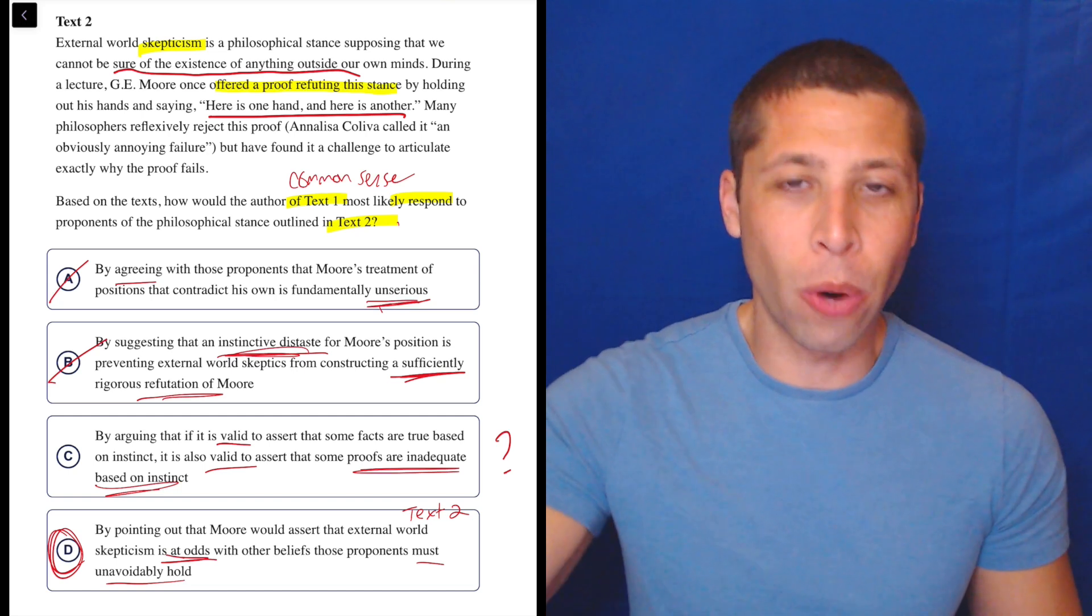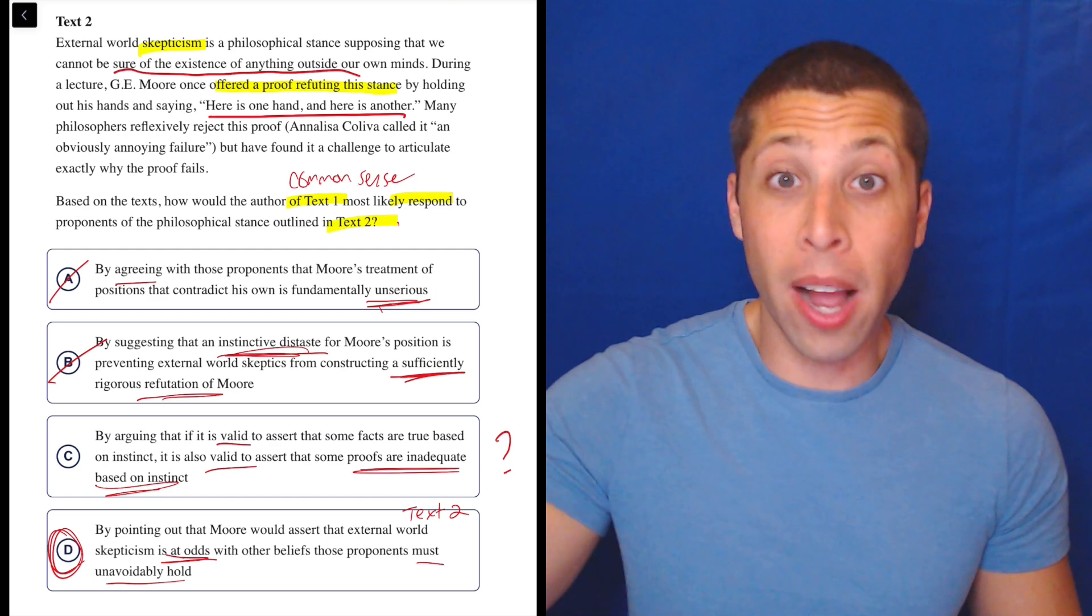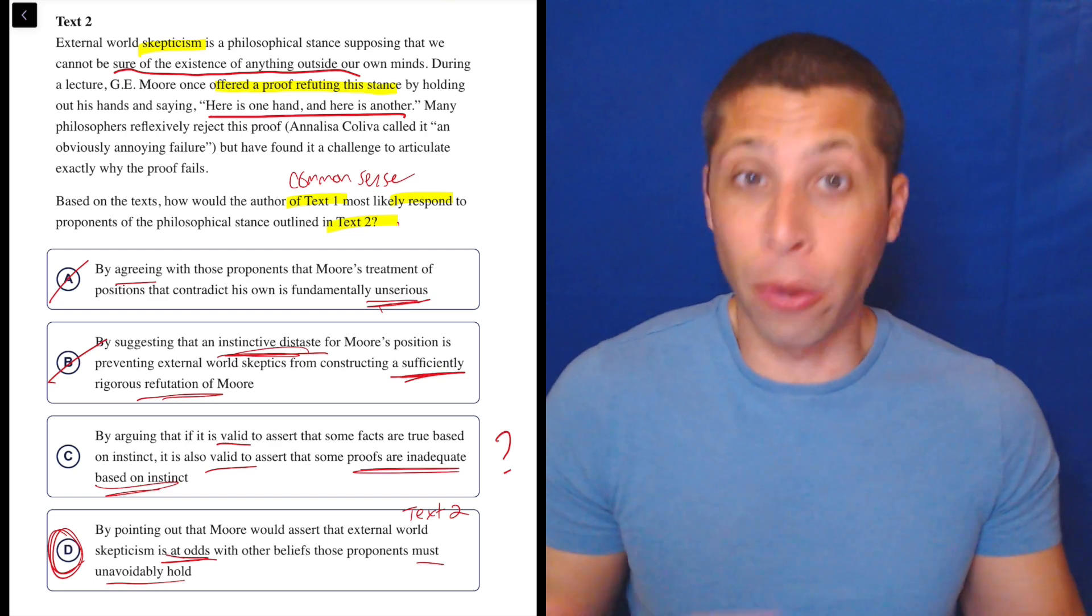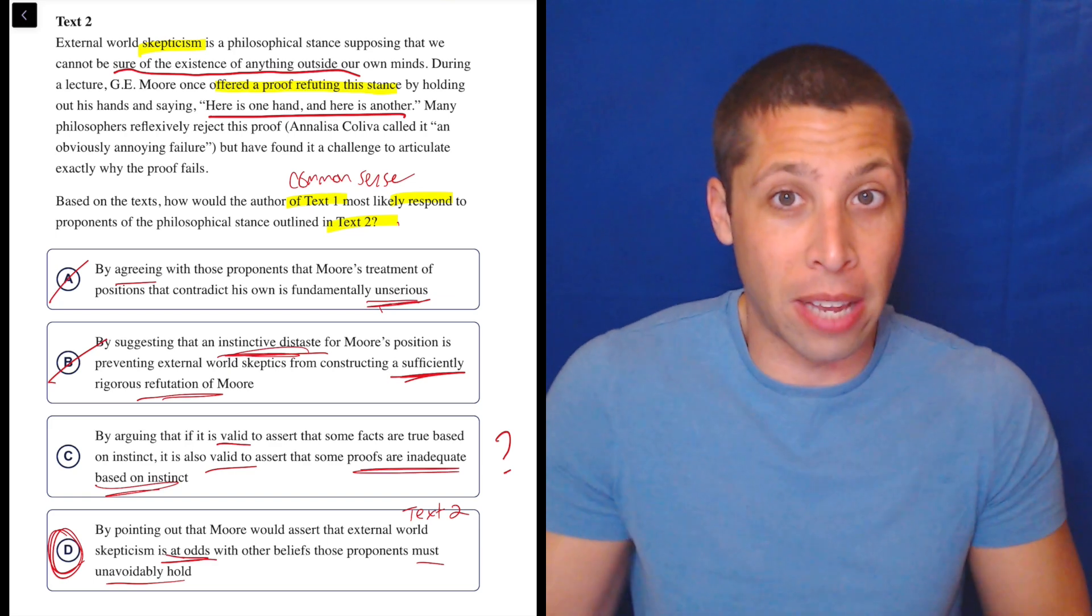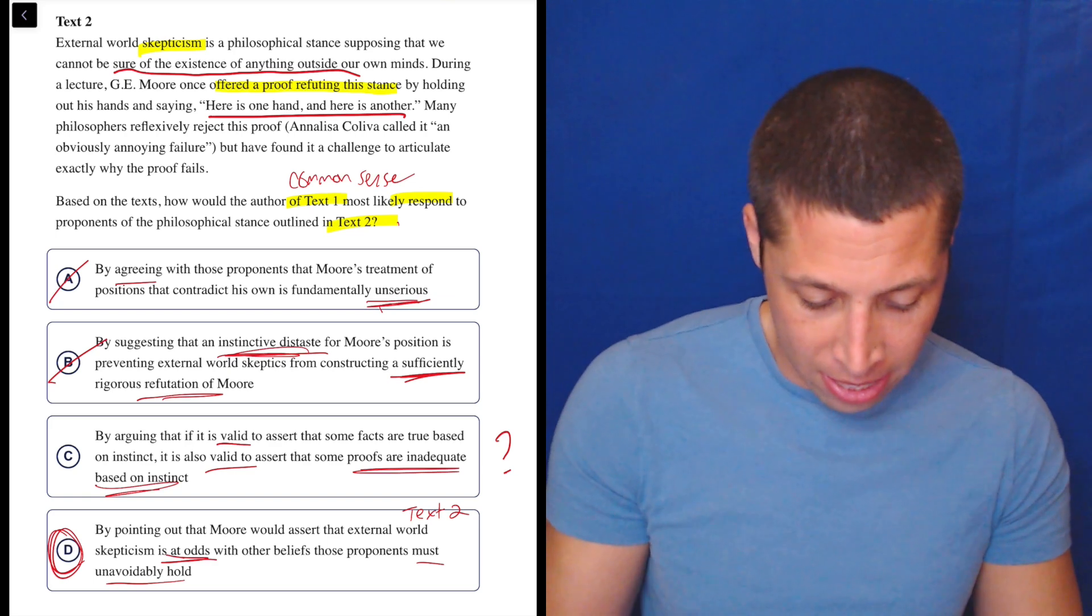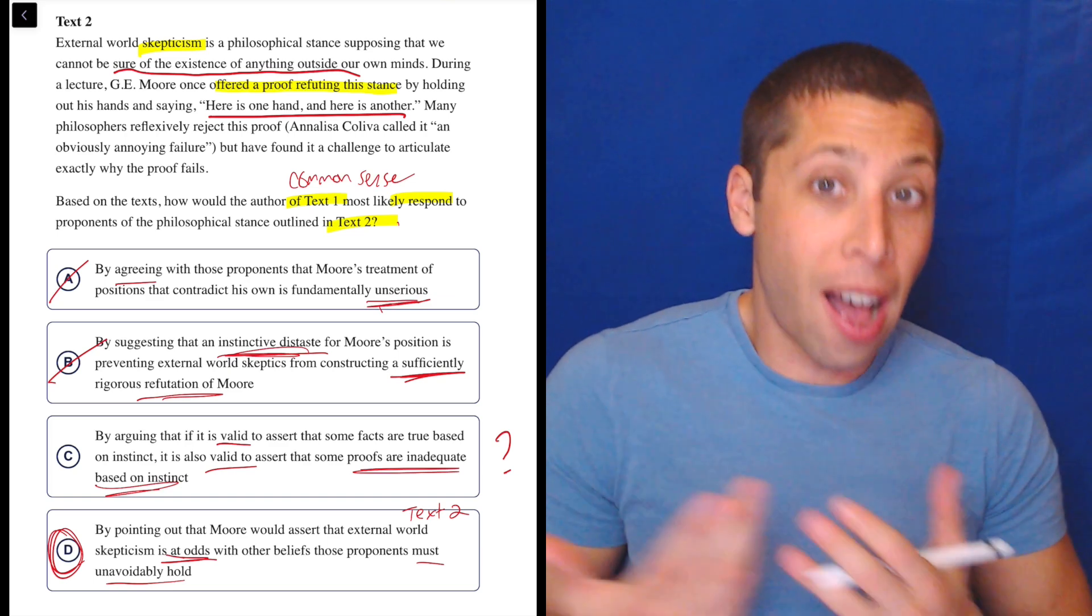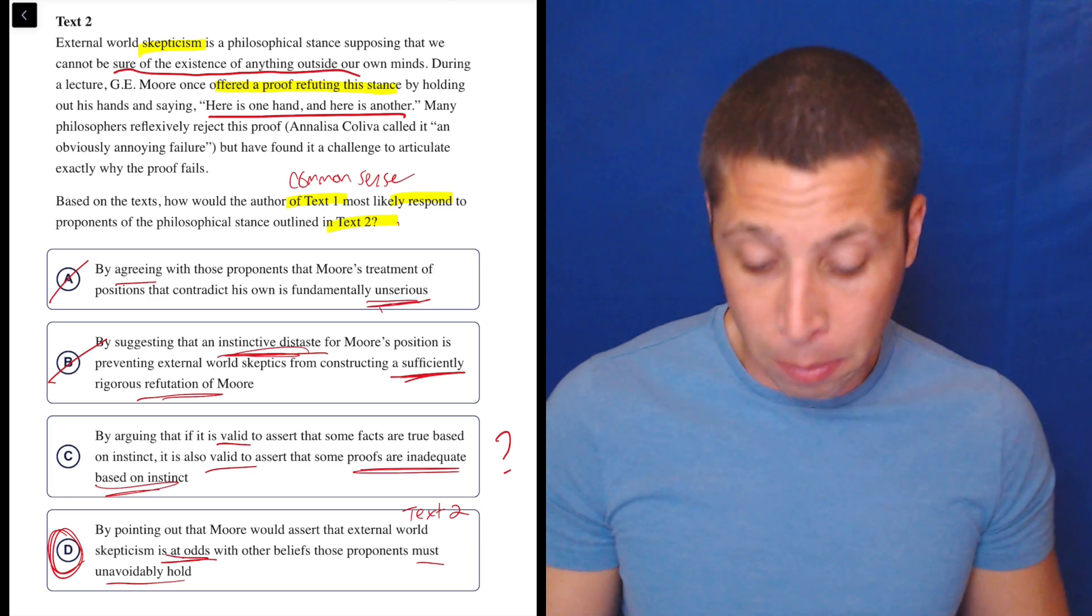But the point is they don't have a proof, right? The external world skeptics don't have a proof of why Moore is wrong. So what proof is inadequate? It's not adequate or inadequate. There is no proof that they've had. That's at least what text two is saying. Again, I just don't even know what C means.